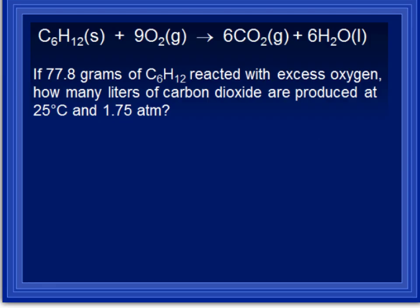So here's a problem. If 77.8 grams of C6H12, and notice C6H12 is in solid form, not a gas, so we couldn't use the ideal gas law with C6H12 anyhow. Reacted with excess oxygen, how many liters of carbon dioxide are produced at 25 degrees and 1.75 atm? Now even knowing carbon dioxide is a gas, we cannot use the 22.4 liters because we're not at STP.